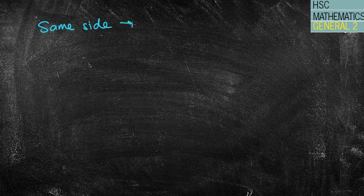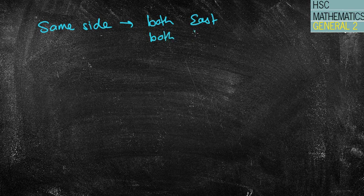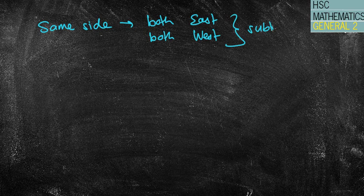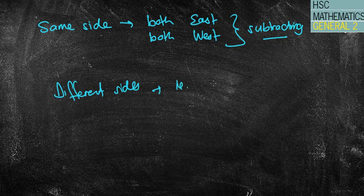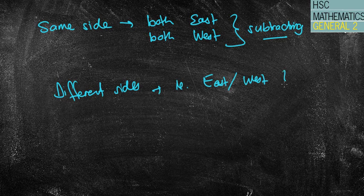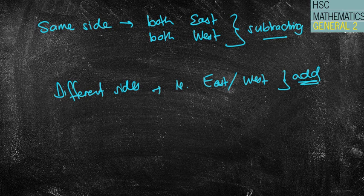Now, basically the rule will be, if they're the same side, so that means they're both east, or they might be both west, then what we're going to be doing is subtracting, because we're trying to find the difference. If they are different sides of the Greenwich Meridian, that means one's east, and the other is west, then we need to add them together to create that angular distance.